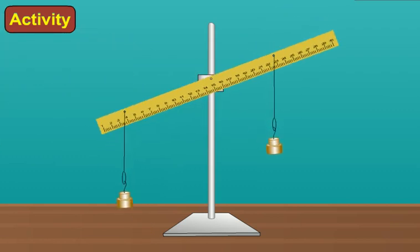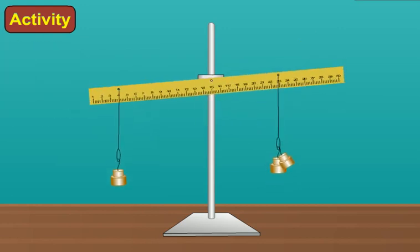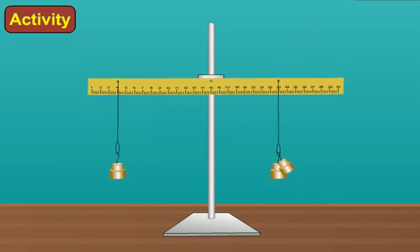And adjust the horizontal position of the scale. Now, measure the distance of each weight on either side of the scale from the fixed point.